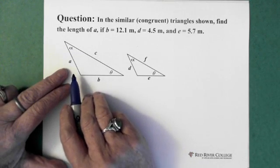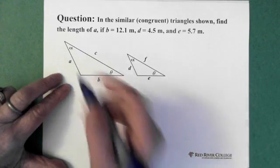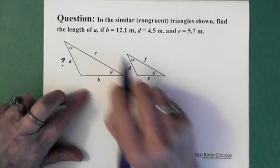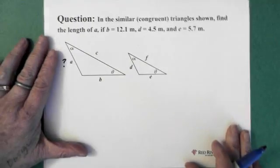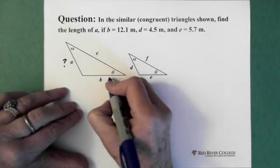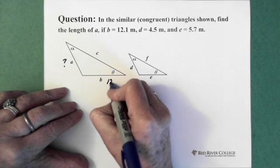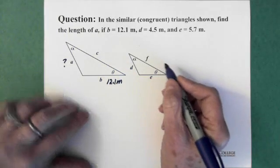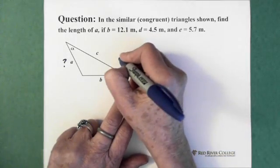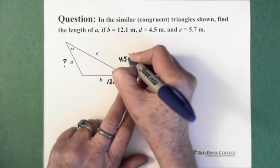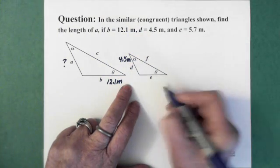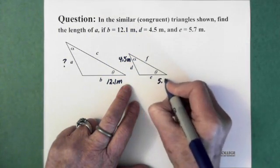So in this question we're being asked for the length of A. We're told that side B is 12.1 meters. We have side D which is 4.5 meters. And we have side E which is 5.7 meters.